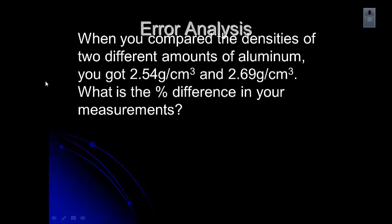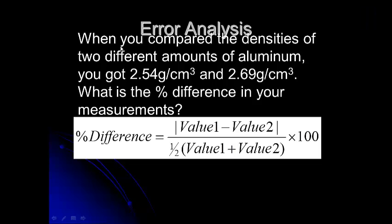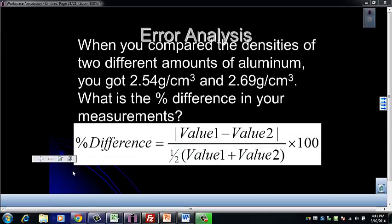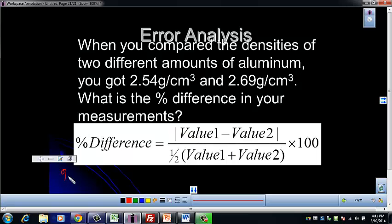Let's try another one. Let's look at the densities we're comparing — that would be for precision, where we're comparing two numbers we got in the lab. When you compare those, you want to use the percent difference. Let's go ahead and set that up. Don't forget to include your absolute value — it doesn't matter which value is value one and which is value two, because the absolute value will take care of that. Let's start with 2.54 grams per centimeter cubed.